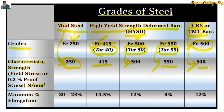Now we will see the minimum percentage elongation for different grades of steel. For Fe 250 (mild steel), it is in the range of 20 to 23 percent; generally taken as 23 percent. For HYSD bar Fe 415, it is 14.5 percent. For Fe 500, it is 12 percent. For Fe 550, it is 8 percent. And for TMT bar (Fe 500), it is 12 percent.